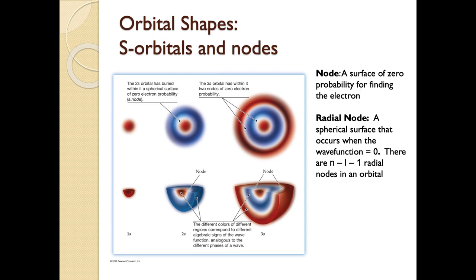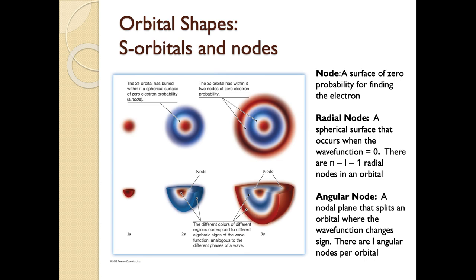We have two types of nodes. The first is a radial node — these are the nodes that exist every time you go up an energy level, adding an extra layer. They're often spherical in shape, as we see in these images. You can calculate how many radial nodes any orbital has by doing n minus l minus 1, where n and l are the quantum numbers for that orbital.